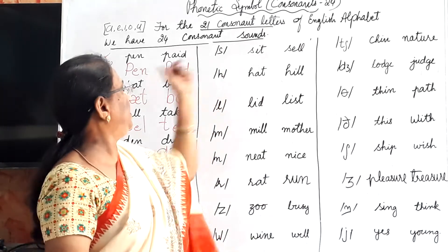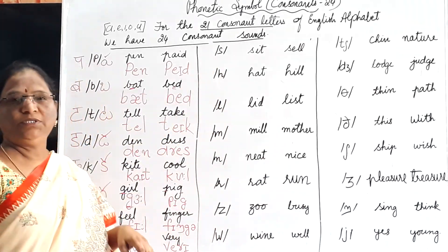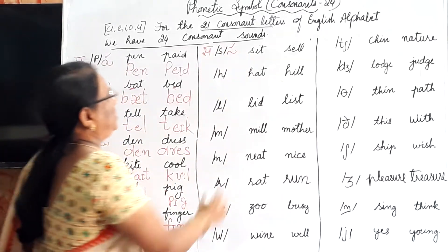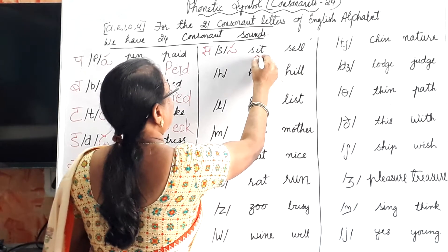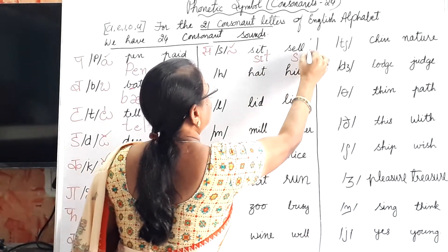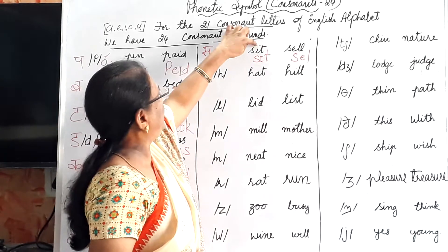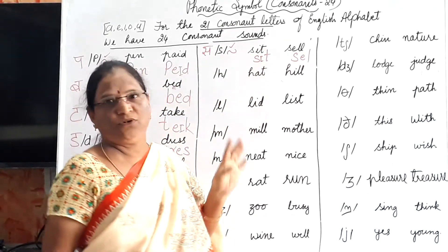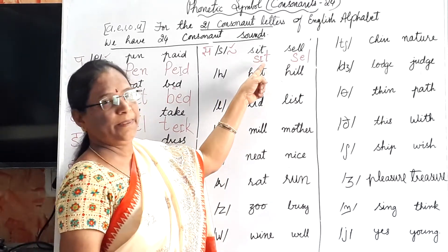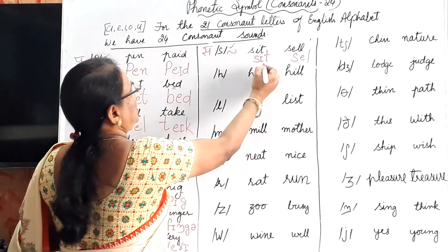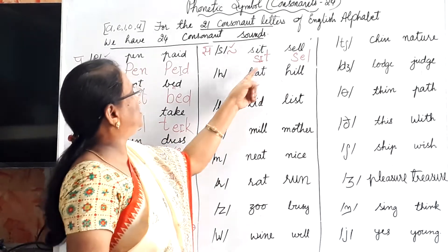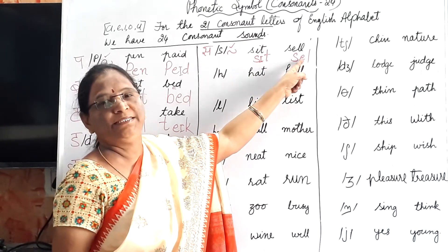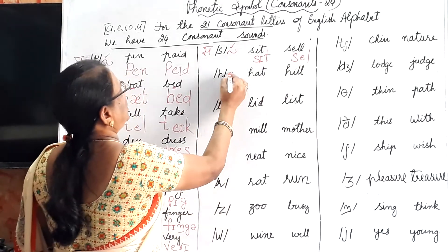S gives the /s/ sound. Sit, sell. In 'sit,' the I produces an /ɪ/ sound. In 'sell,' the E produces an /e/ sound. S is S, T is T — the consonant stays the same; the change occurs only with the vowel letter.